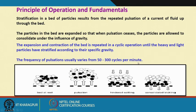How many cycles are needed? The frequency of pulsation usually varies from 50 to 300 cycles per minute, depending on the size range being treated and the density difference between the heavy and light particles. This is where you can apply the concentration criteria discussed at the beginning of the gravity concentration lecture.